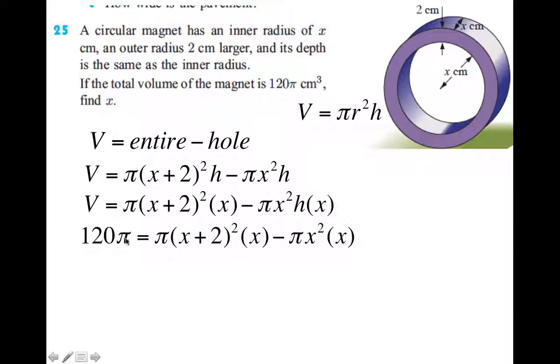So that's what I'm going to put in here. 120π is this whole thing minus the entire thing minus the hole in it, right? So 120π equals this. Now this can be simplified more.